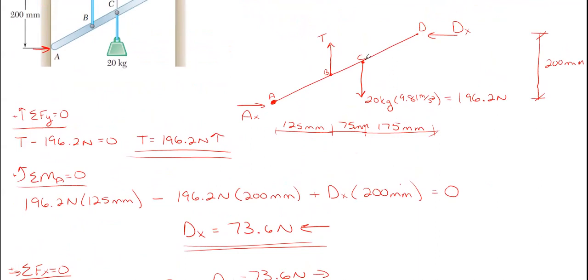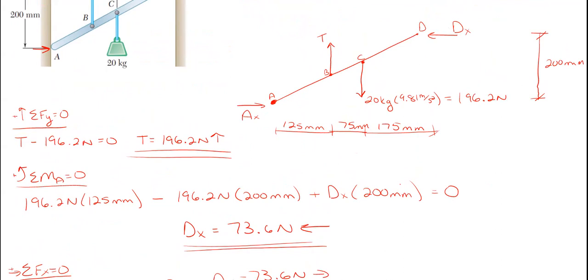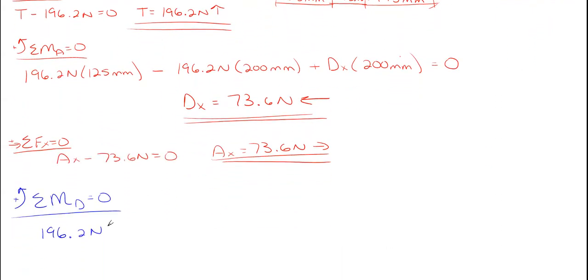What I'm doing here is going from right to left, gathering up points like this. We would have our first one of 196.2 newtons times its distance of 175 rotating counterclockwise, so positive times 175 millimeters. Then we subtract the cable tension force of 196.2 newtons times its perpendicular distance to D, which would be 250 millimeters. It is negative because it'll be rotating clockwise about point D.